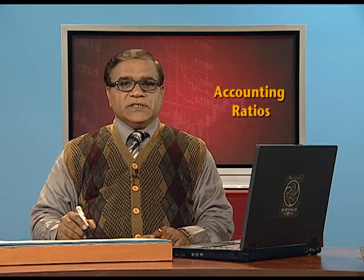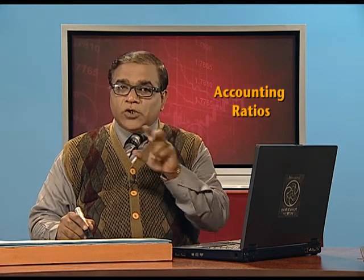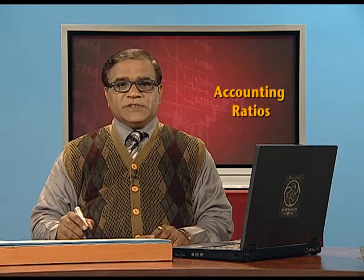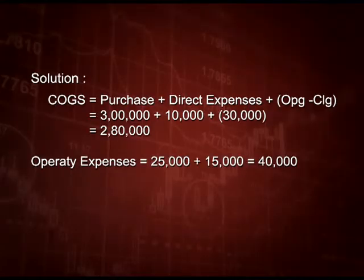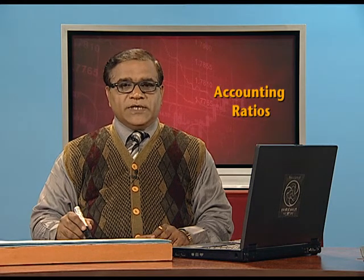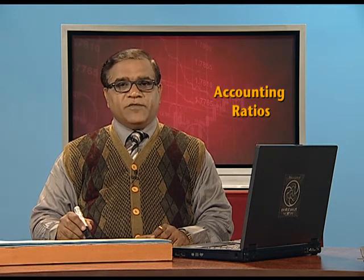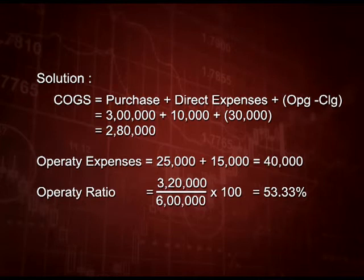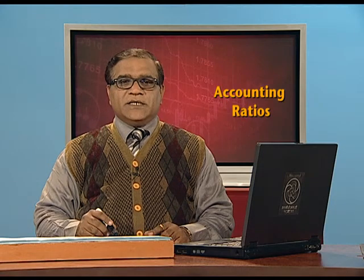Operating expenses are those related to business operations — selling and administrative expenses — and not loss on sale of asset or investment, because that is a non-operating expense. So operating expenses total is 40,000 (25,000 plus 15,000). Operating ratio is calculated as: cost of goods sold 2,80,000 plus operating expenses 40,000 equals 3,20,000, divided by net sales 6,00,000 into 100, giving the answer as 53.33 percent.